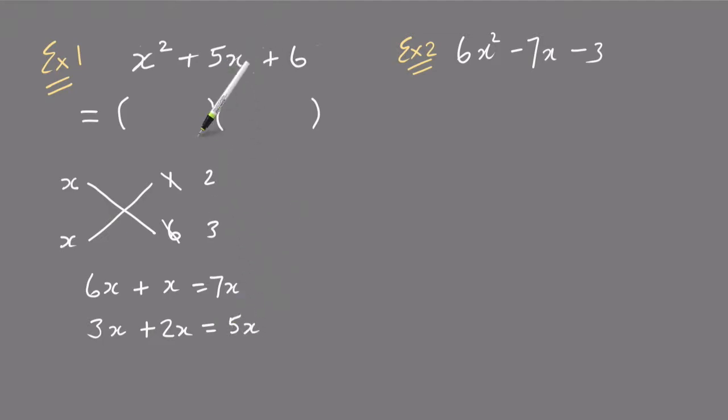Then 2 times x is 2x, and then 3x plus 2x equals 5x, which is the middle term. That means that's one bracket there, so that's x plus 2, and the other bracket is x plus 3.